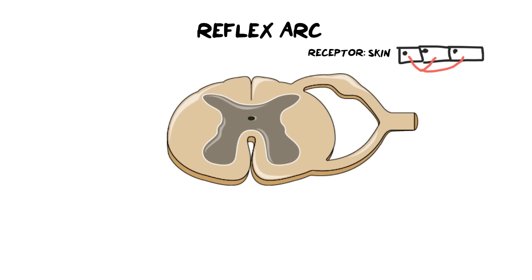Let's say, for this example, you've put your hand down on a hot stove. That information is going from those receptors and it's going to travel down a neuron. That neuron is going to enter into your spinal cord via the dorsal root, and it's going to make its way towards the gray matter. This particular neuron — and you're going to need to know this — is a sensory neuron. We know this because it's bringing in the sensory experience, what you're feeling. We also know it's a sensory neuron because its cell body, this little circle I've drawn on the side here, is off to the side of it.